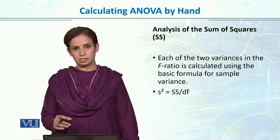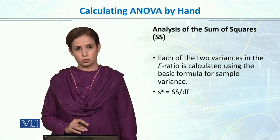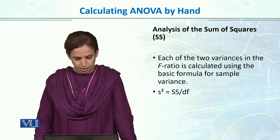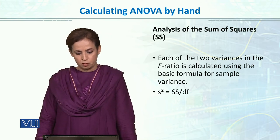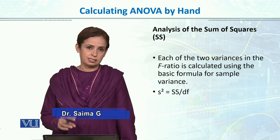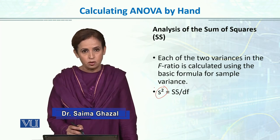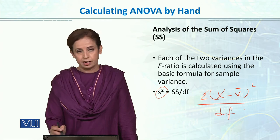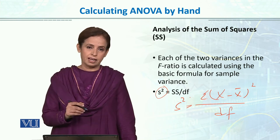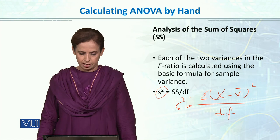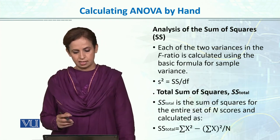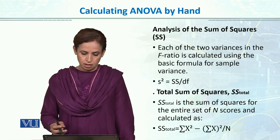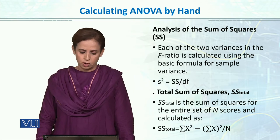Let me tell you exactly what we have done in the calculation. Number one: analysis of sum of squares — the first step is to calculate sum of squares for the 3 groups. Number two: we calculate the variance in the F ratio using the basic formula for sample variance, which is SS divided by degrees of freedom. We need to calculate total, within, and between variance.